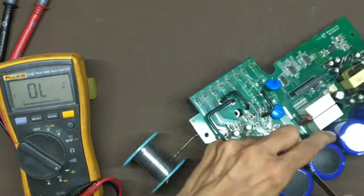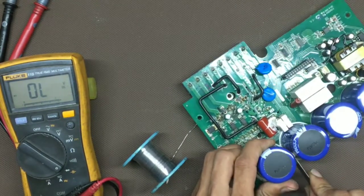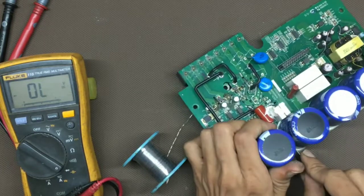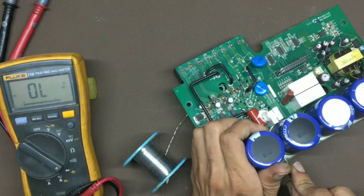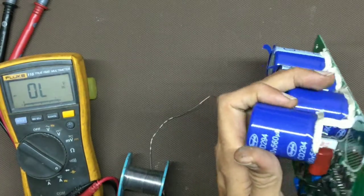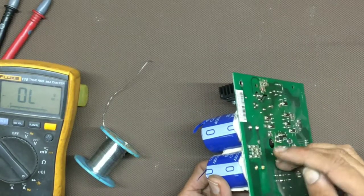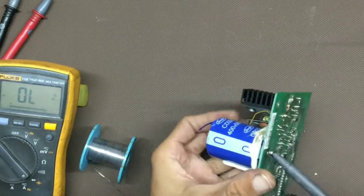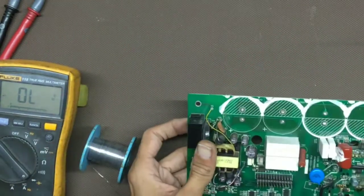This gum is holding it back. So, let's cut it first. Be careful with the blade or you can damage the PCB. Apply some flux. Now, it's done.